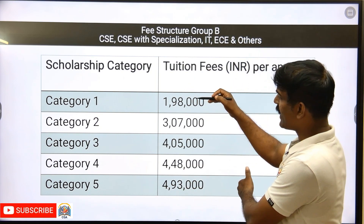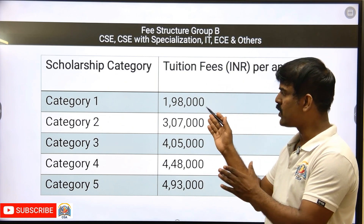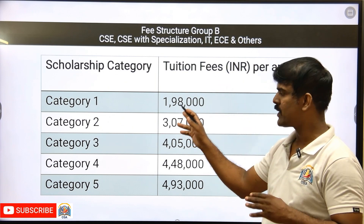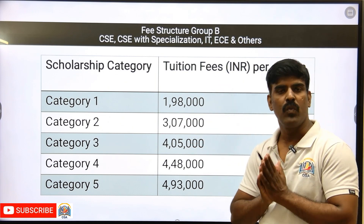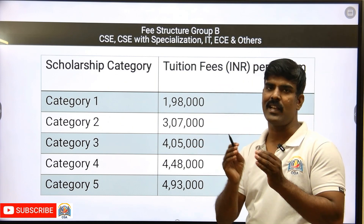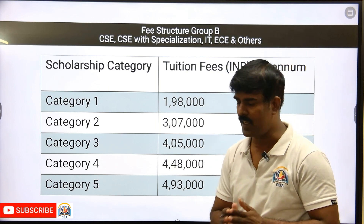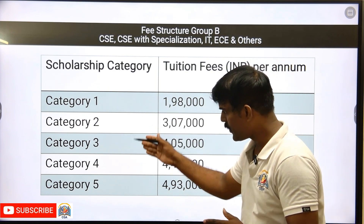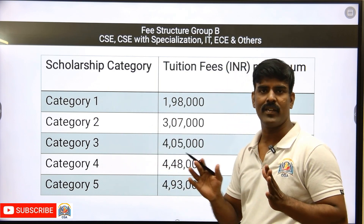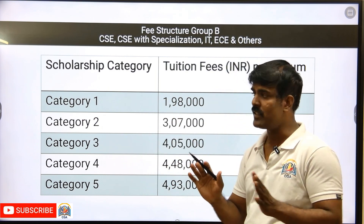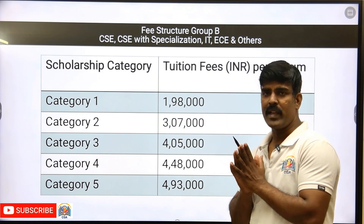If you select category 1, it is around 2 lakhs plus 2 lakhs, so 4 lakhs per year, which is 16 lakhs total. Category 5 gives the highest fee structure. This is the VIT fee overview.